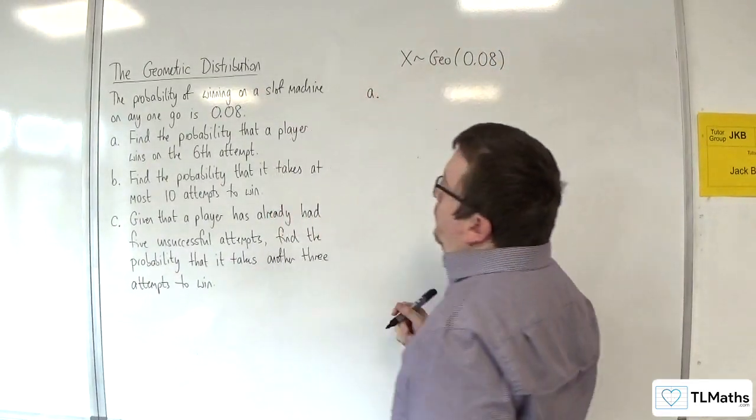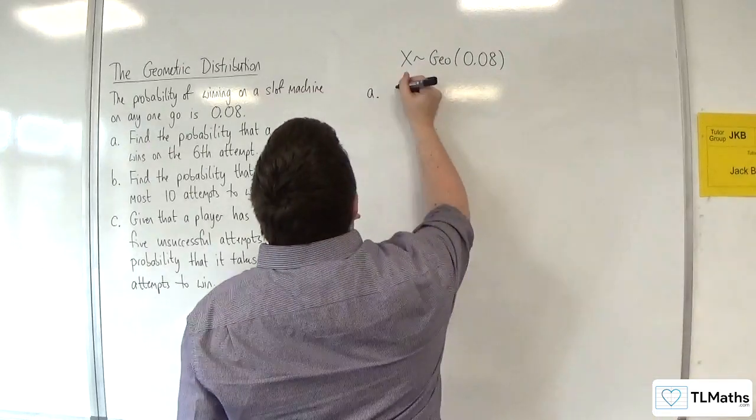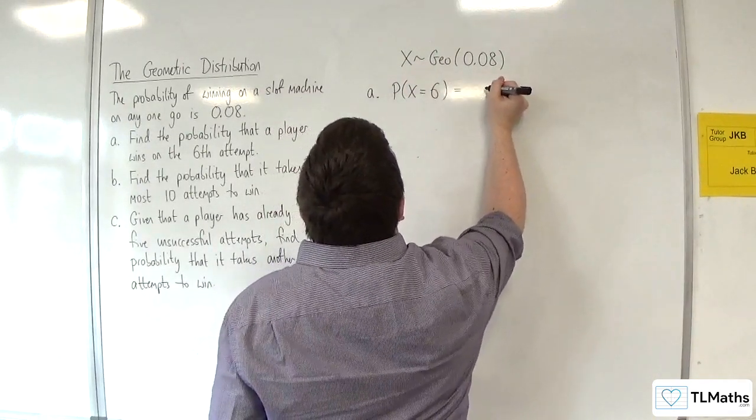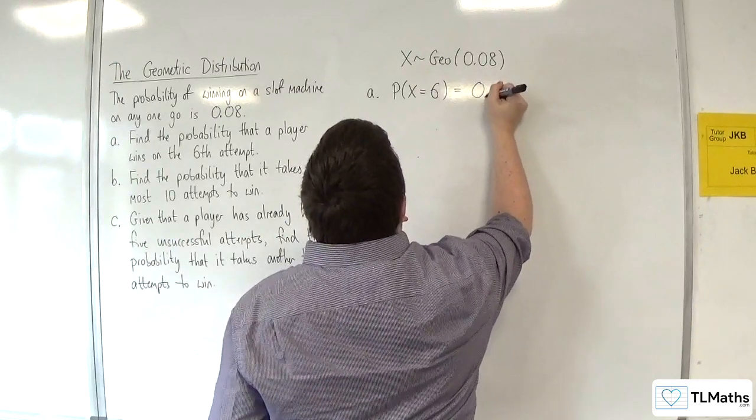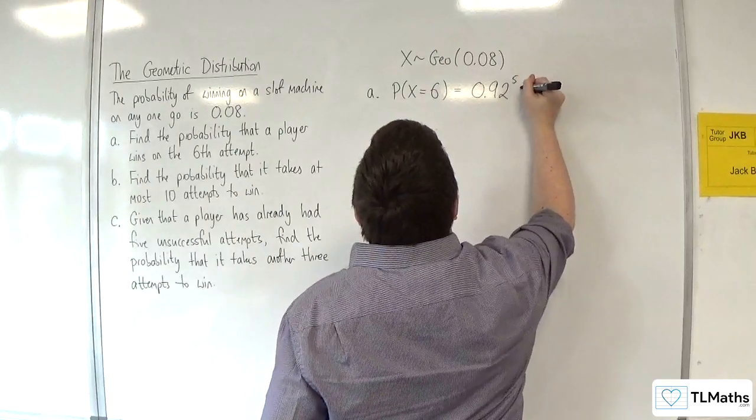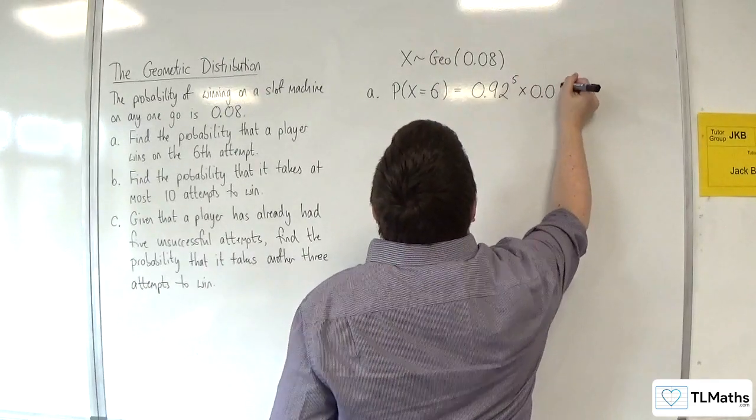So, part A, find the probability that a player wins on the sixth attempt, that's the probability of X being equal to 6. They've got to lose 5 times, so 0.92 to the power of 5, and then win on the sixth attempt.